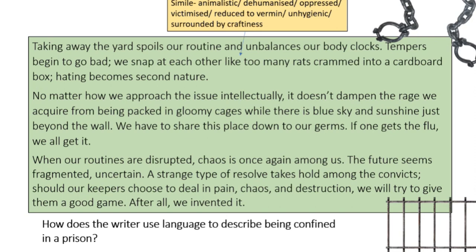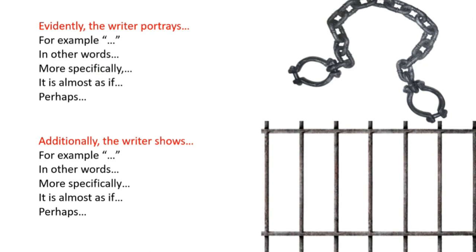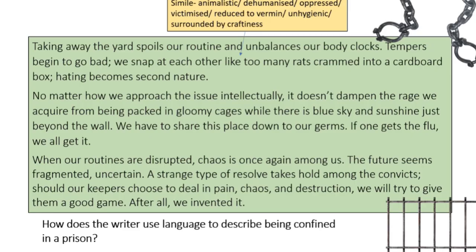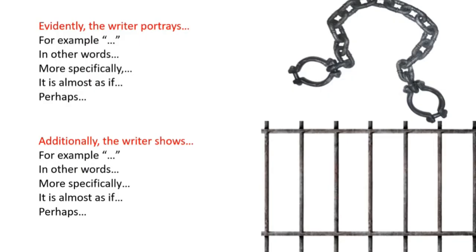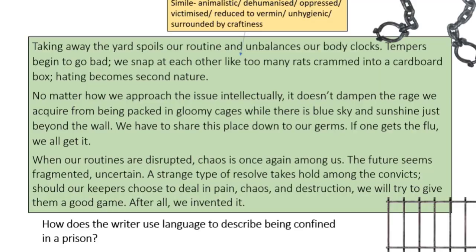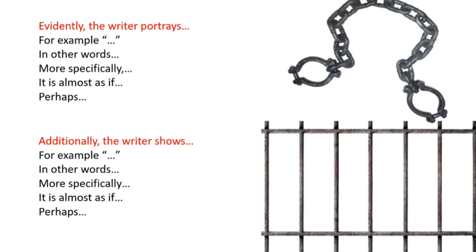So what we're looking at is: how does the writer use language to describe being confined in a prison? The two boxes of information can help you answer this question, but those annotations are something you need to be doing in your exam by yourself. These are the sentence starters I would use for question two: 'Evidently, the writer portrays the misery of seeing freedom of being imprisoned. For example, rays of sunshine and the iron security screens. In other words, the sun represents hope and joy and aspiration. More specifically, the juxtaposition highlights the misery.' Additionally, 'the writer shows that the prisoners have been dehumanized by this confinement. For example, like too many rats crammed into a cardboard box.' The structure is going to improve your grade.